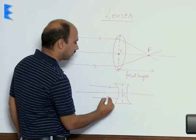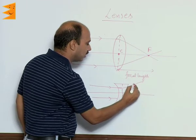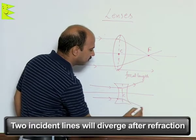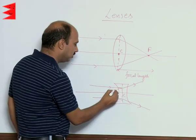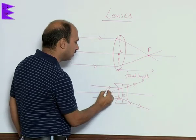These incident rays diverge after refraction. When we proceed these rays backward, this point is F here.